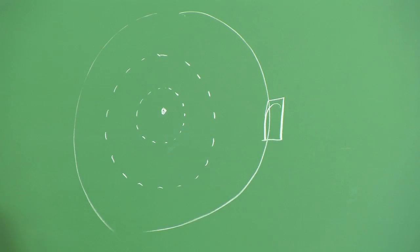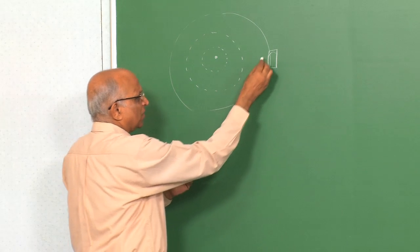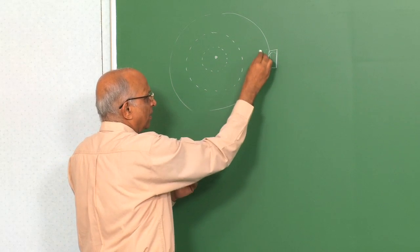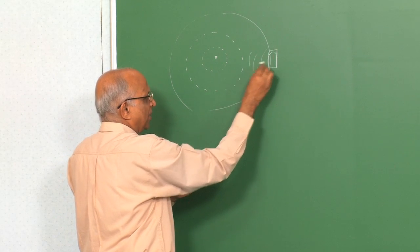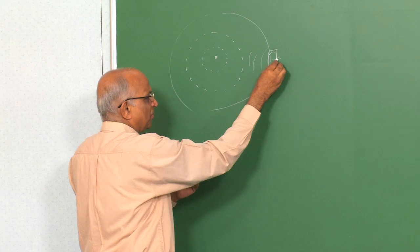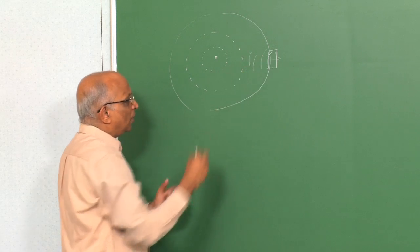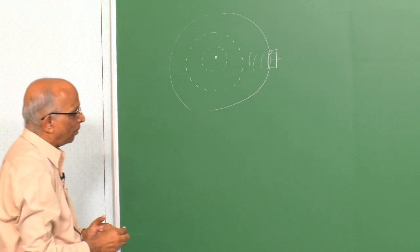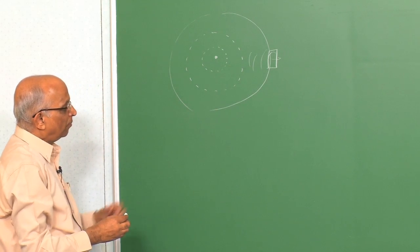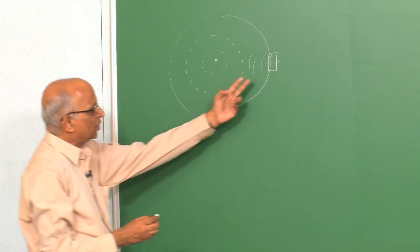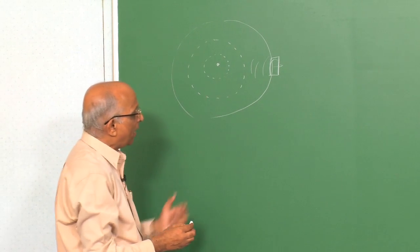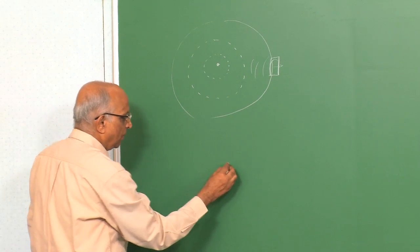What happens literally is we will expect some reflection here, some transmission here, and I want to take a look at this problem. But to be able to do this problem, we go back to what we have done so far.